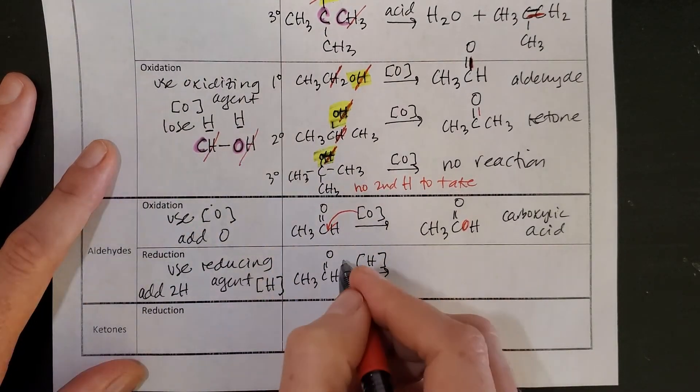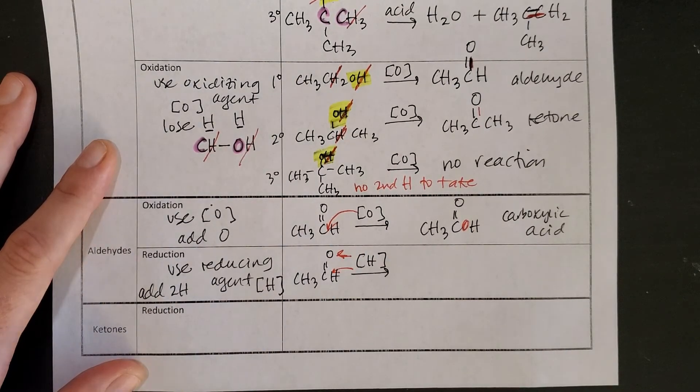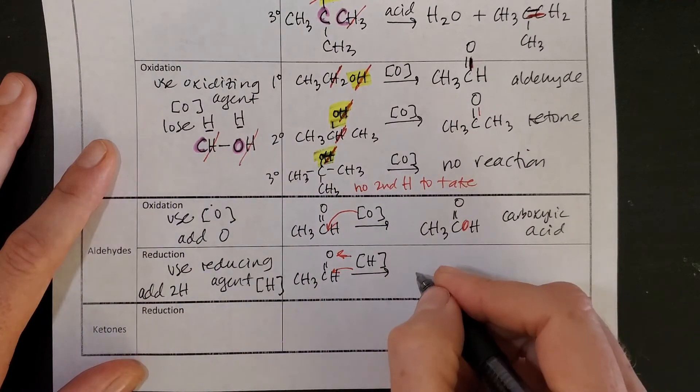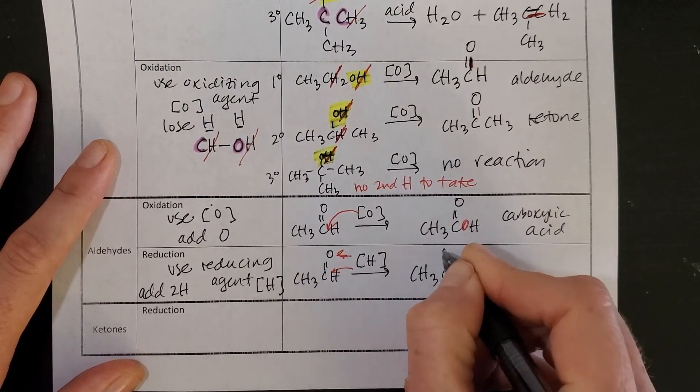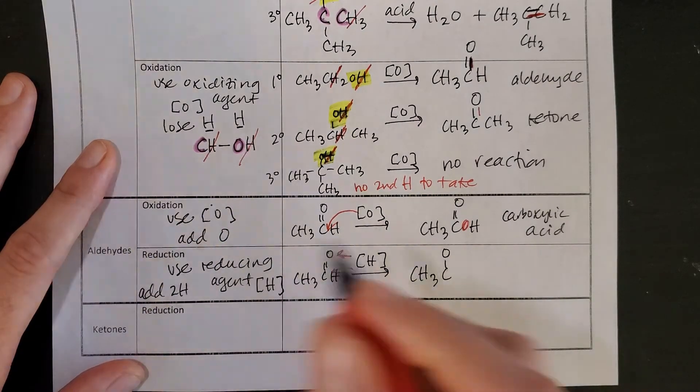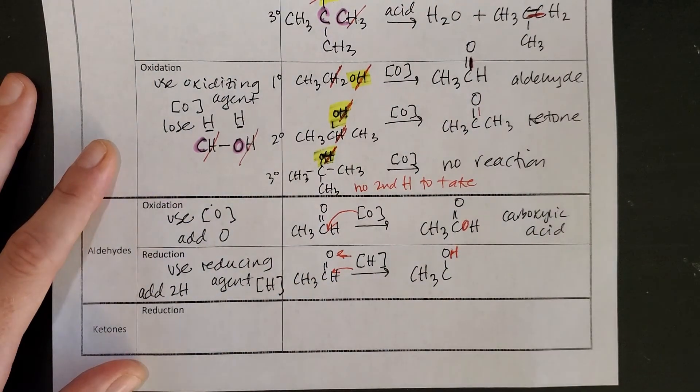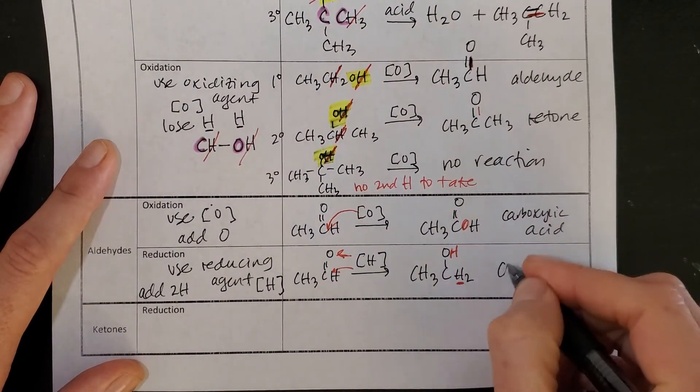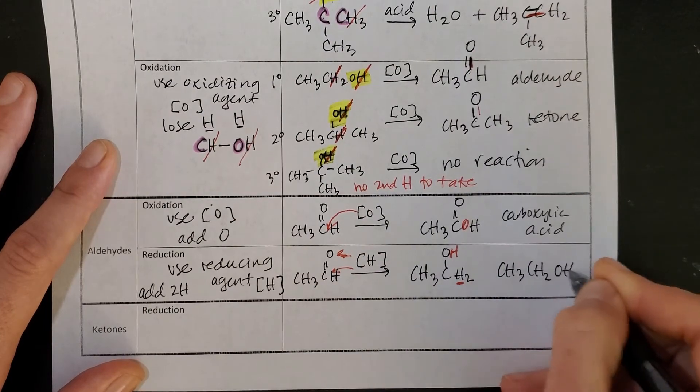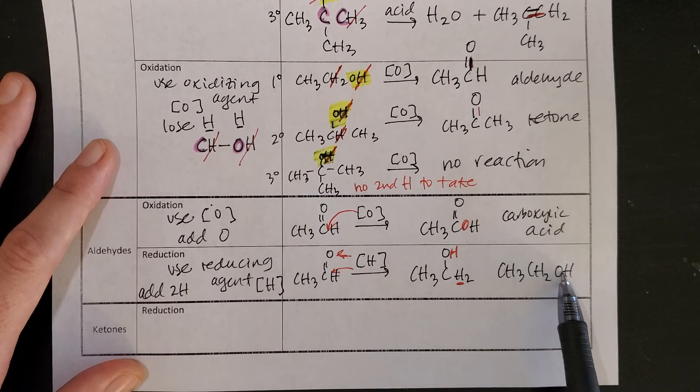That reducing agent is going to be able to add hydrogens to each side of the double bond. Double bonds are rich in electrons, so they're very reactive. And so I get CH3C, now a single bond, and then I would have added on to this an H. And I have H2 here now because I've gained a hydrogen. You could also write this as CH3CH2OH. Note that when you reduce aldehydes, you always get primary alcohols.